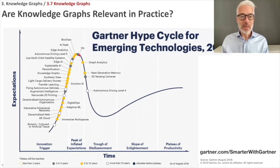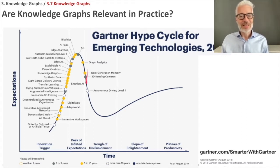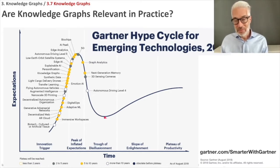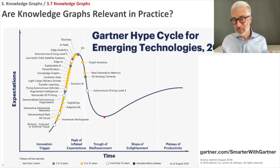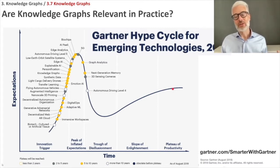Then everybody realizes we thought so much of that technology and it would help for all the problems of mankind, but probably it doesn't. So you go down again until you reach the trough of disillusionment. And then, if you have reached the bottom, slowly there comes enlightenment — you get a better perspective and realization of exactly that technology. You rise slowly over the slope of enlightenment until you reach finally the plateau of productivity, the point in time when this technology can be applied in a productive way.